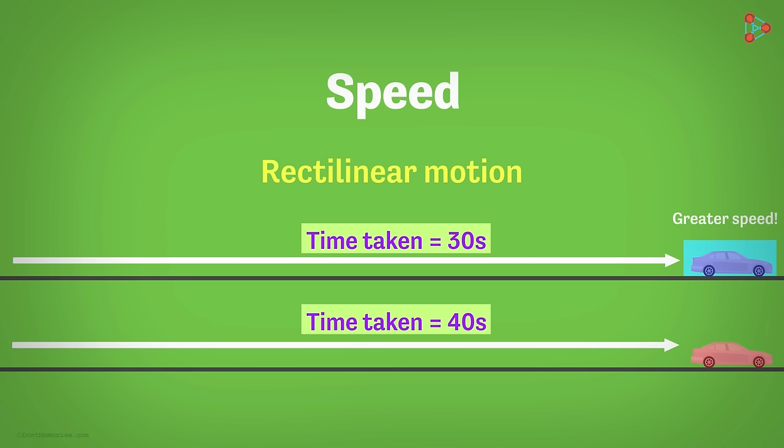By intuition, we can say that the blue colored car was traveling at a greater speed than the red one. Why? Because the blue car covered the same distance in lesser time.